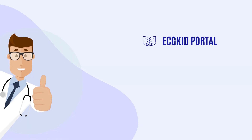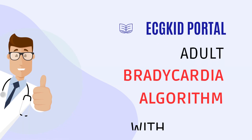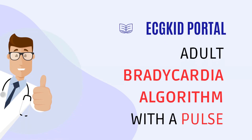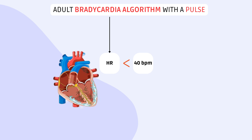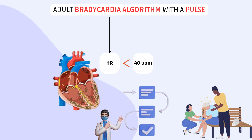Hello and welcome to our channel. Today we will discuss the adult bradycardia algorithm with a pulse. Bradycardia is a condition in which the heart beats too slowly, depriving the body of the necessary blood flow and oxygen. In such situations, healthcare professionals rely on the Advanced Cardiac Life Support, or ACLS bradycardia algorithm, to manage the patient's condition.